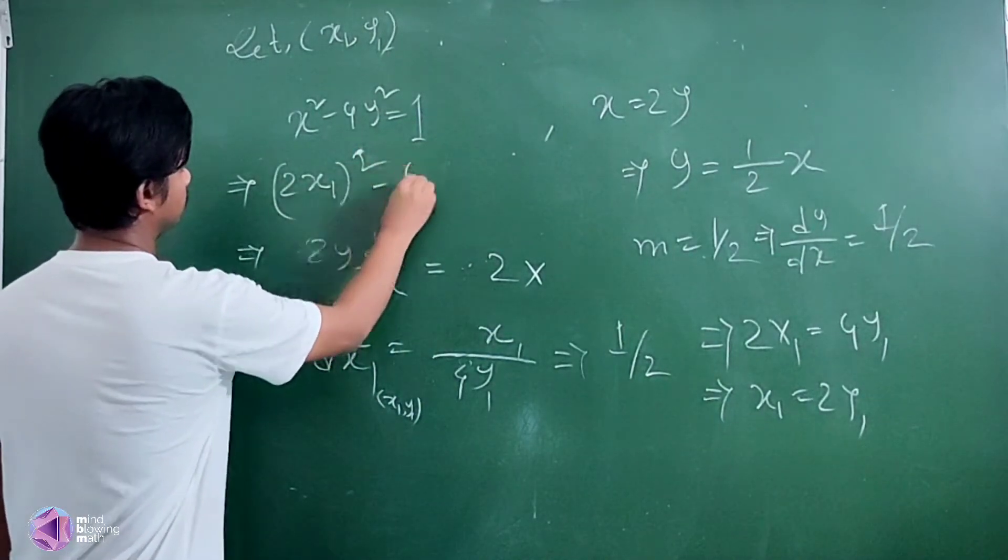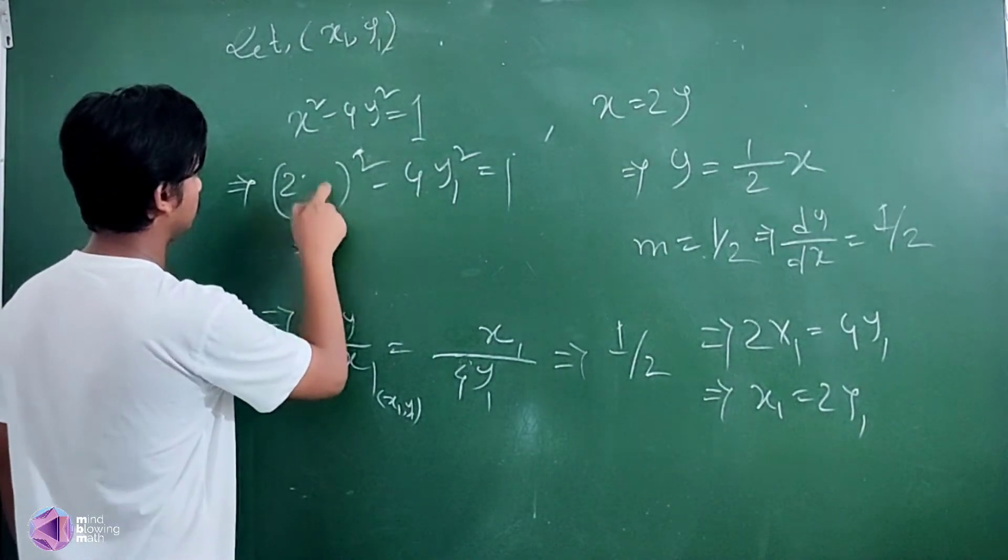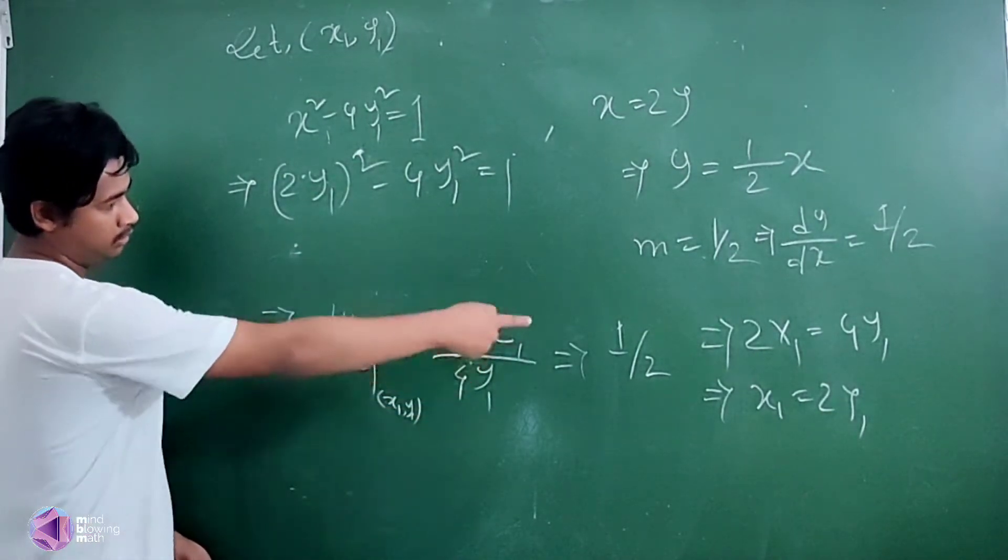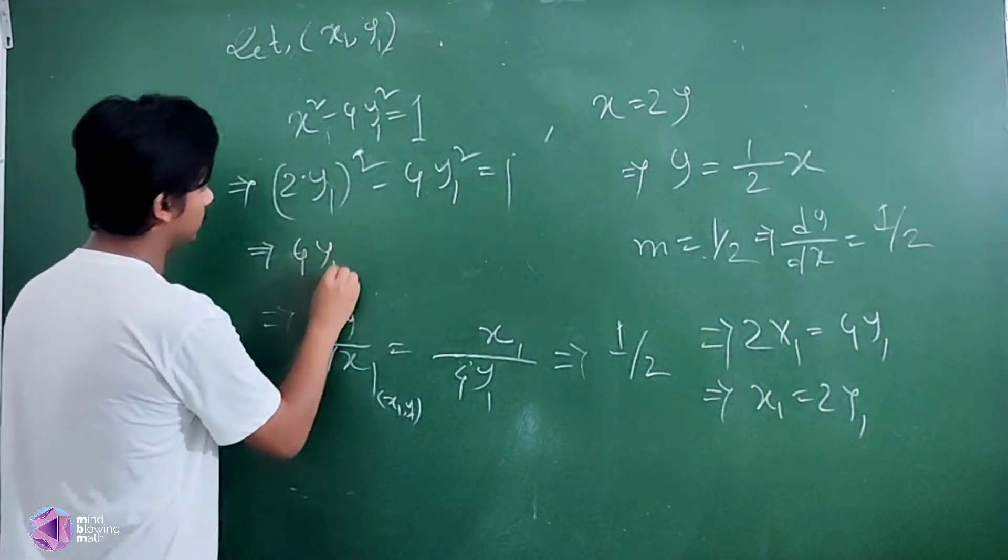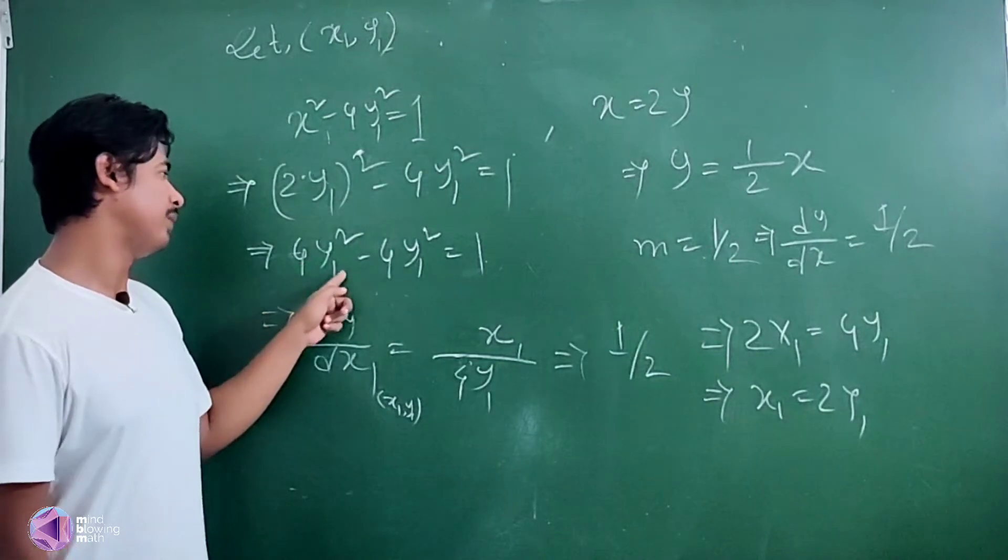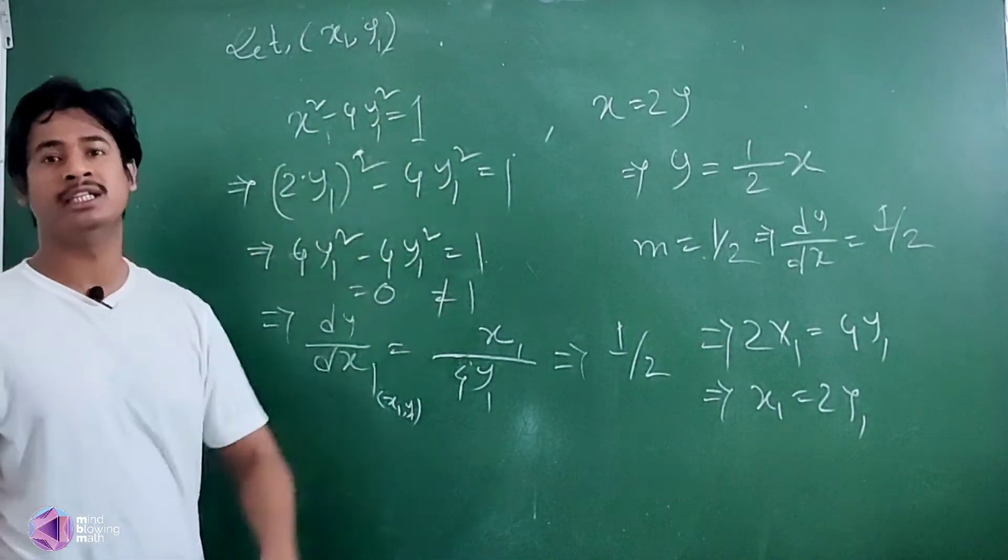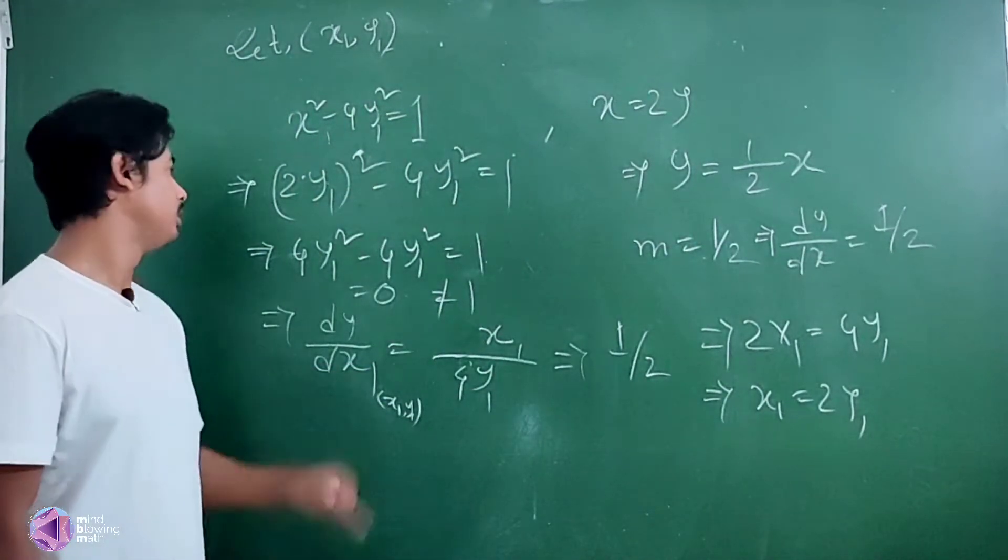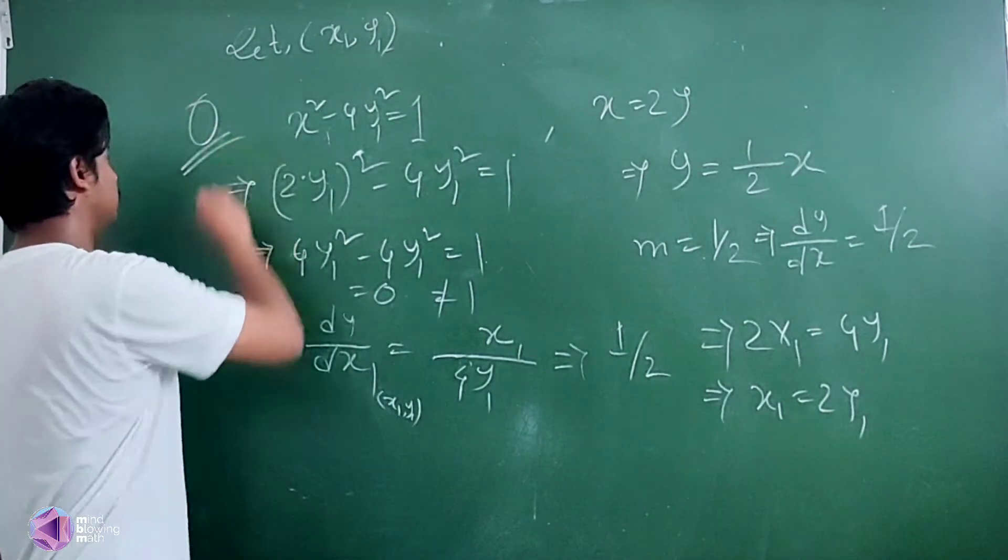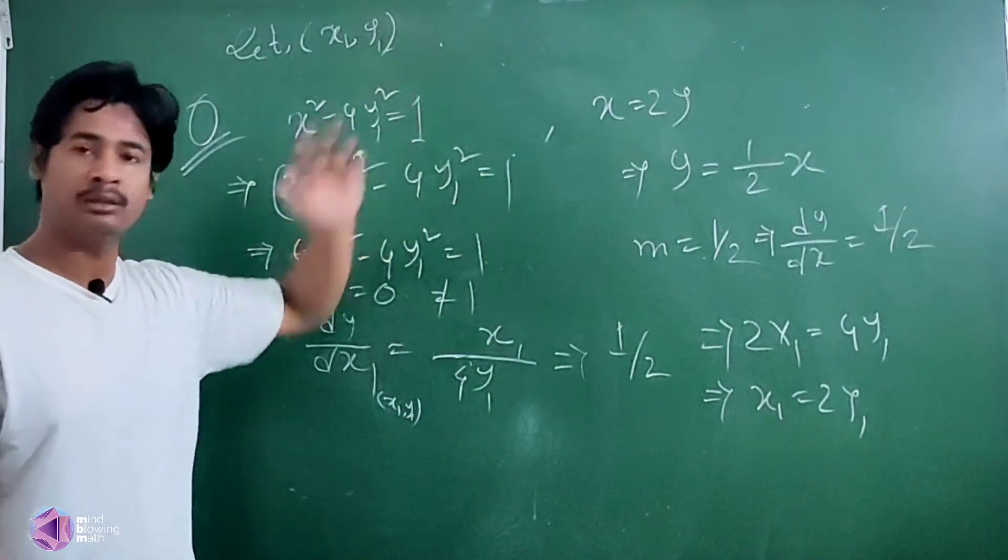Substituting into the curve equation: 4y1 square minus 4y1 square is equal to 1. Now see carefully, 4y1 minus 4y1 is equal to 0, but this should equal 1. It is not possible, so the total number of points is equal to 0.